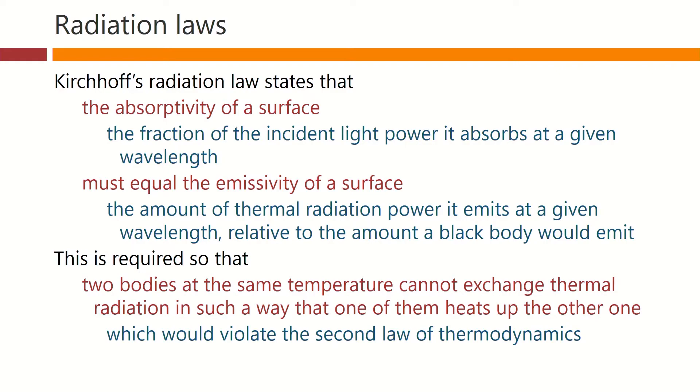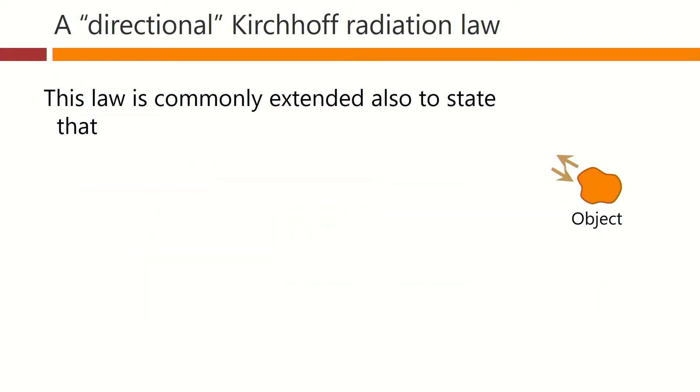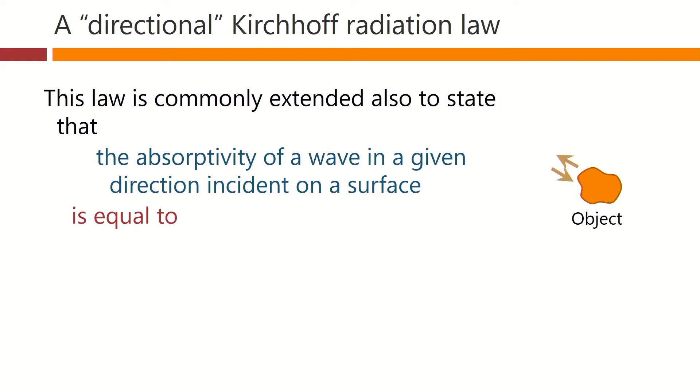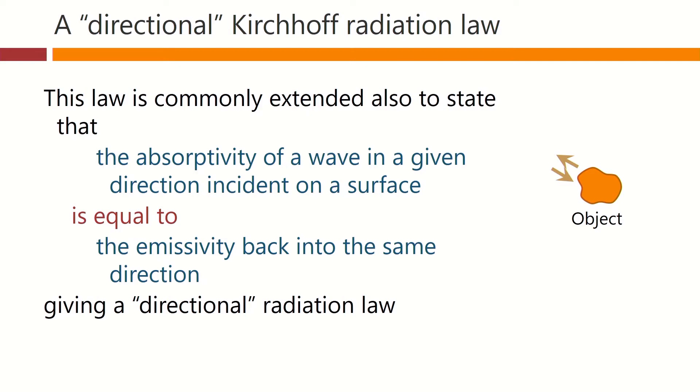This is required so that two bodies at the same temperature cannot exchange thermal radiation in such a way that one of them heats up the other one, which would violate the second law of thermodynamics. This law is commonly extended also to state that the absorptivity of a wave in a given direction incident on a surface is equal to the emissivity back into the same direction, giving a directional radiation law.